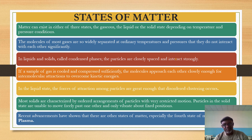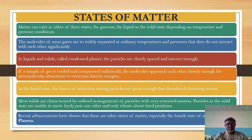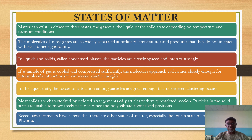The molecules of most gases are so widely separated under normal temperature and pressure that they do not interact with each other significantly. In the gaseous state, molecules are free to move. In liquids and solids, they become condensed — we call these condensed phases — and the particles are closely packed and interact strongly. If a gas is cooled and compressed, intermolecular attractions overcome kinetic energies.